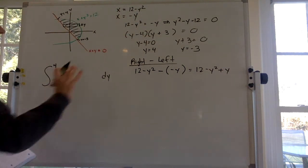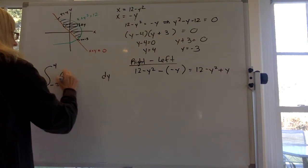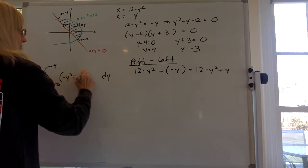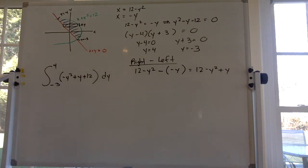Okay, I'm gonna rewrite it. I'm just gonna rewrite it, put the minus y squared first, plus y next, plus 12 next, dy. So that's what you got to do. You got to integrate that.